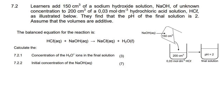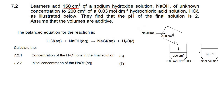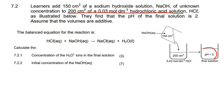Here we have a typical acid-base exam question — a seven-marker. Learners add 150 cm³ of sodium hydroxide of unknown concentration to a hydrochloric acid solution. They mix it together and find that the pH of the final solution is 2.